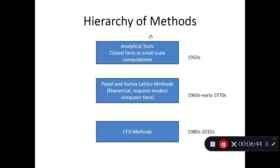Hierarchically, early work consisted of very simple analytical closed-form solutions suitable for hand calculation or early 1950s computers. Then vortex lattice techniques, similar to homework number 2 and quiz number 1, were developed for supersonic flows using horseshoe vortices and closed vortex loops. The key difference is that the influence function for induced velocity varies because of the supersonic flow. These require modest computer time on the order of minutes on today's computers.